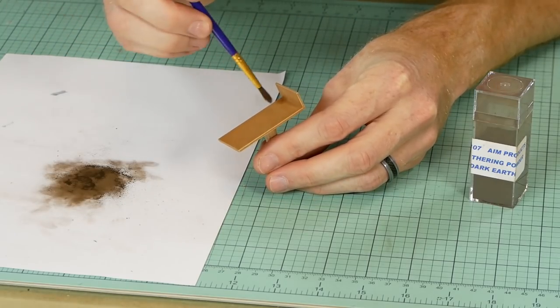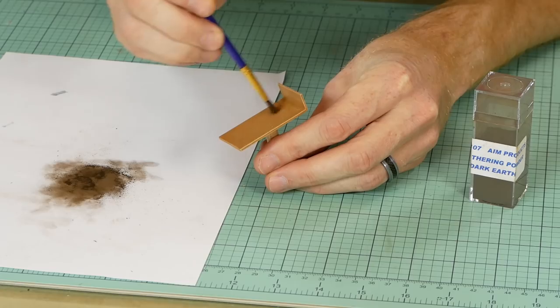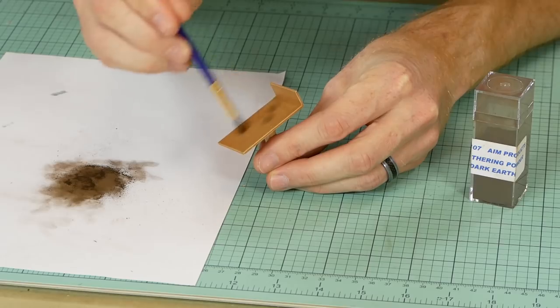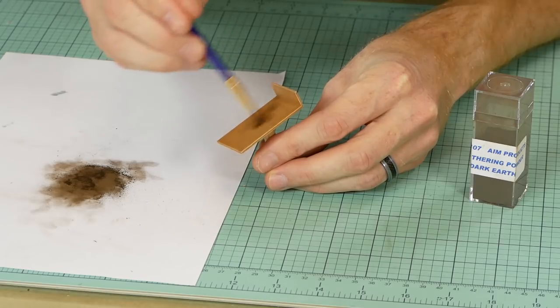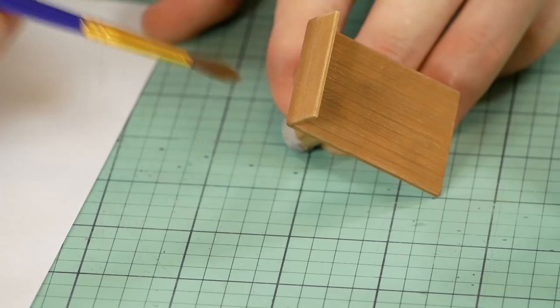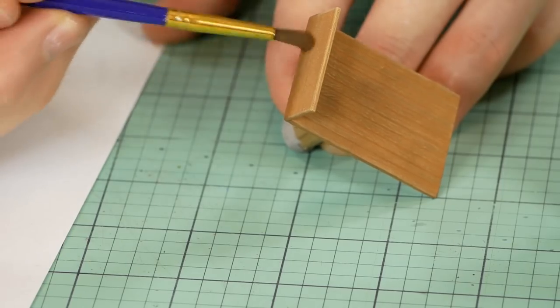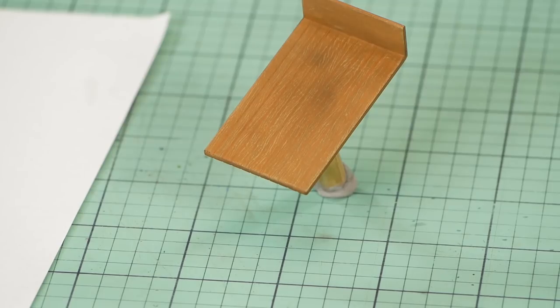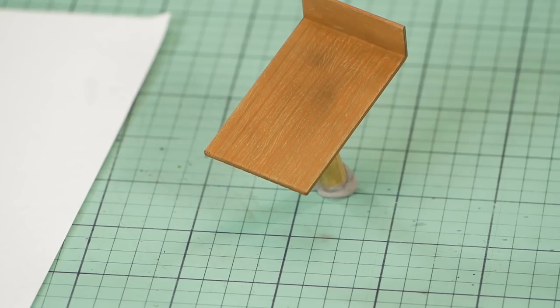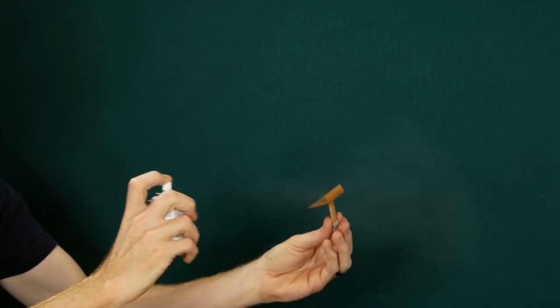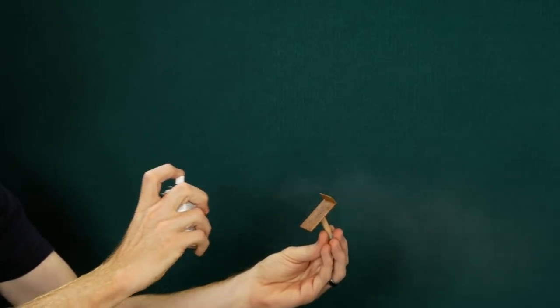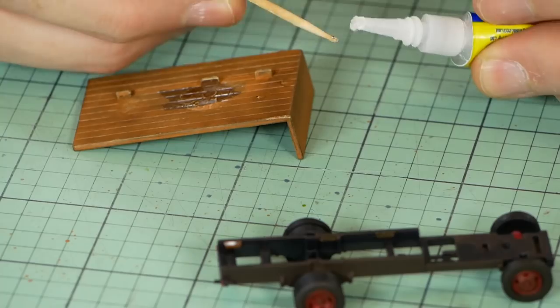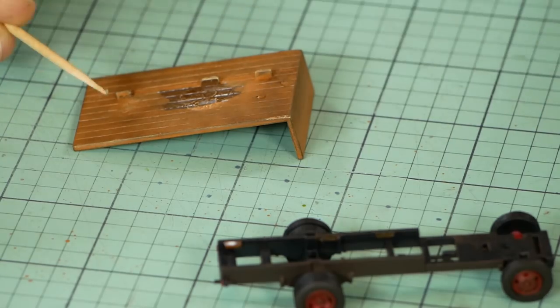As with every other part of the model so far I further add detail and weathering by brushing on a light coat of weathering powder. Focusing on a few heavy spots to add depth and color variety, then tie it all together with a general coat over everything. Once finished the flatbed gets a spray with dull coat. The flatbed can then be reattached to the chassis with super glue.